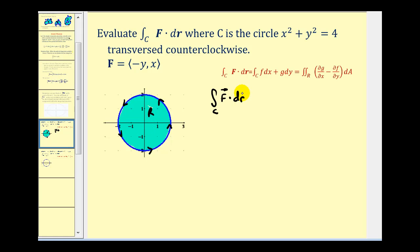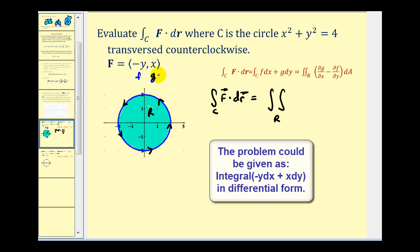We want to evaluate this line integral where C is the circle x² + y² = 4, traversed counterclockwise. Our region satisfies the requirements of Green's Theorem, so we're going to rewrite this line integral as a double integral over the region R. The x component of vector field F is equal to little f and the y component is equal to G. The partial derivative of G with respect to x is one, minus the partial derivative of F with respect to y, which is negative one.